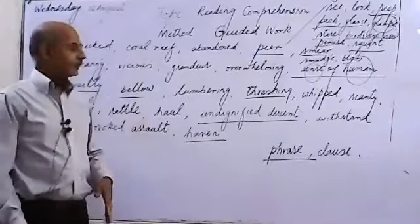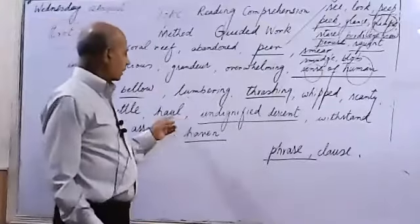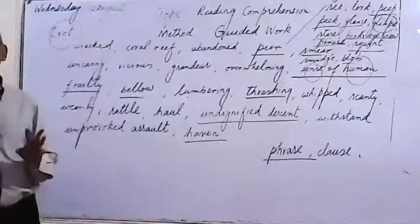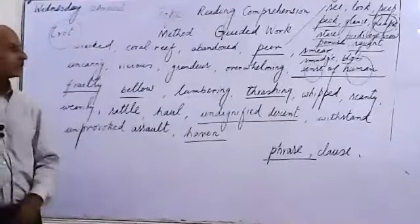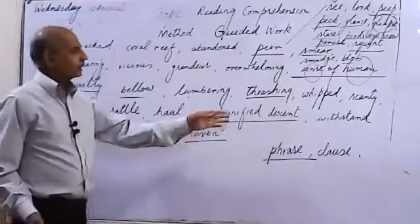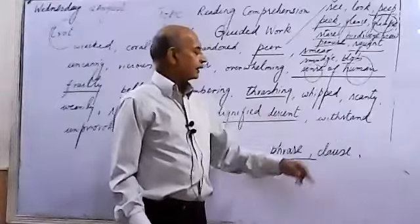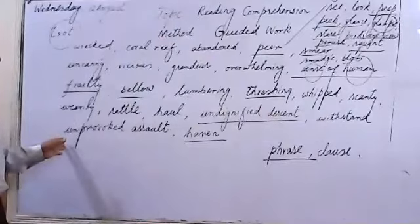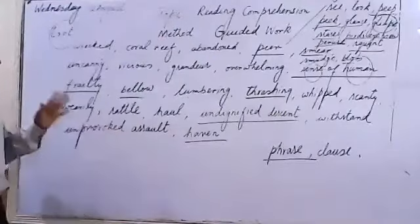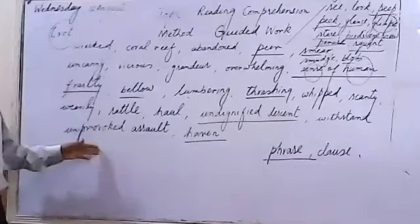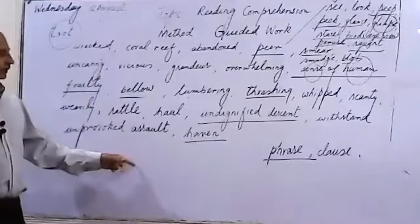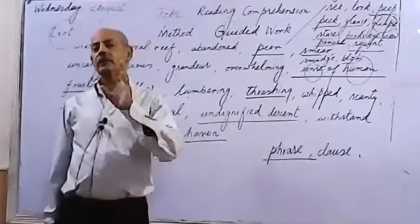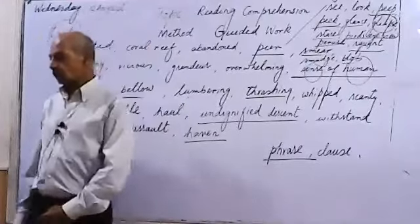Haul, pull. In the context, it will mean undignified descent. Awkward, undignified means in the context awkward fall. Descent was fall. Withstand means resist, tolerate. Unprovoked assault - unjudged, uncalled for assault, attack. Haven is any sheltered, safe place.